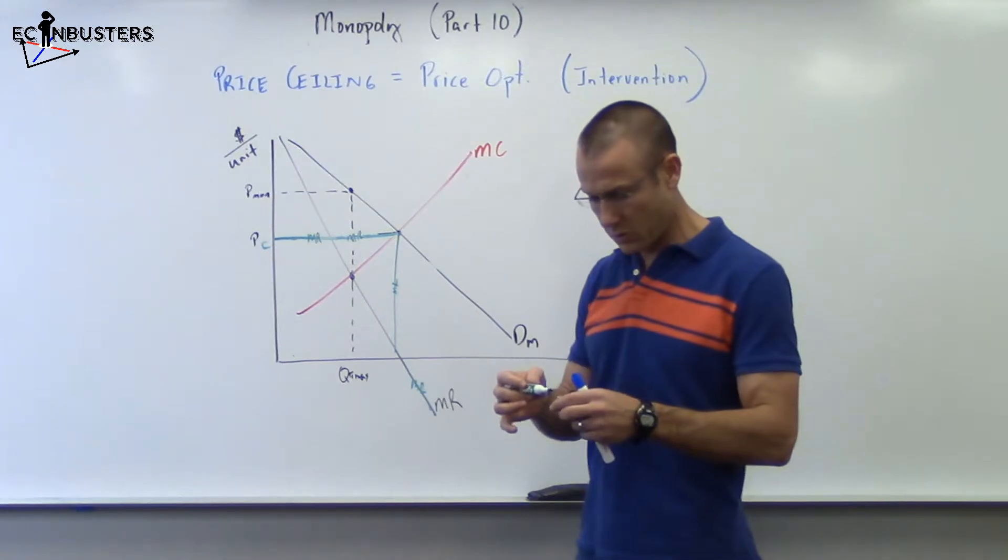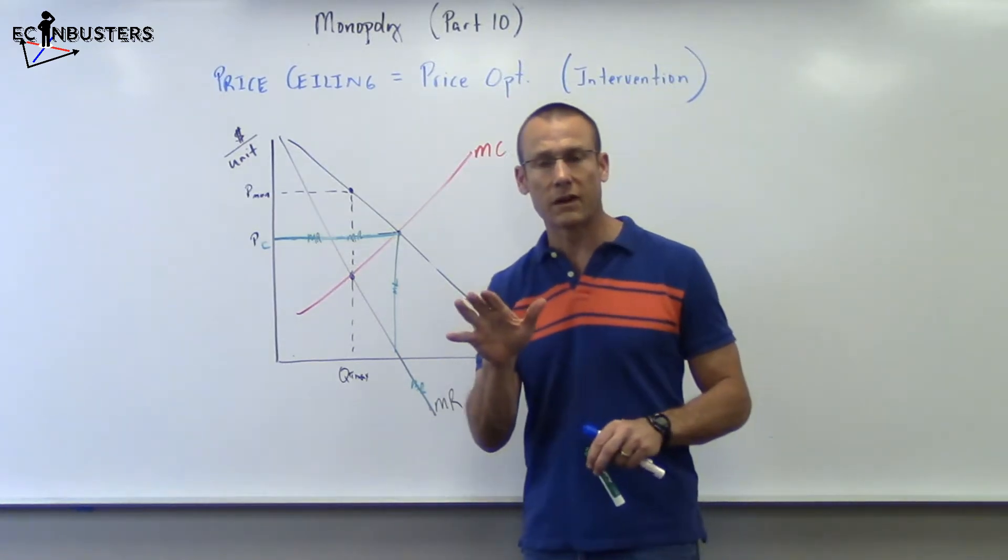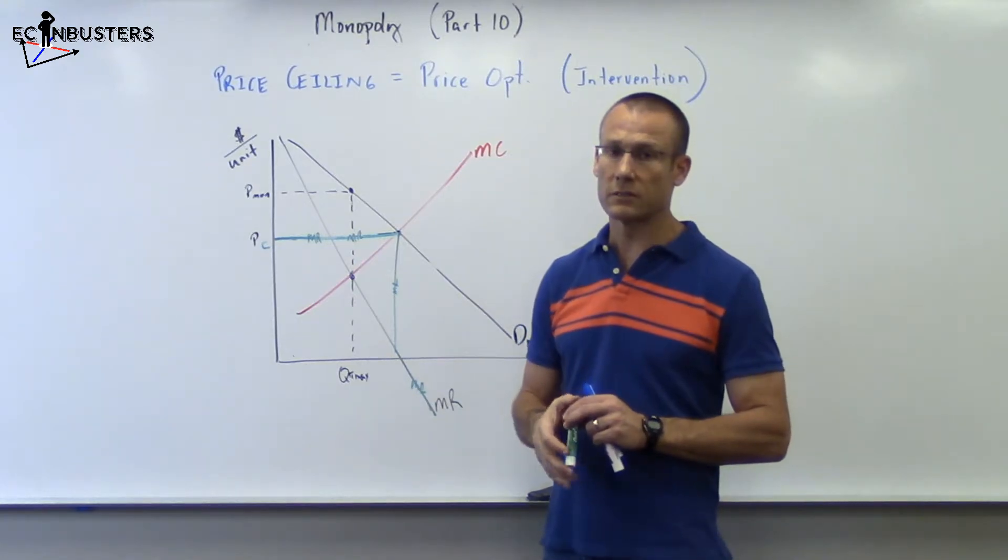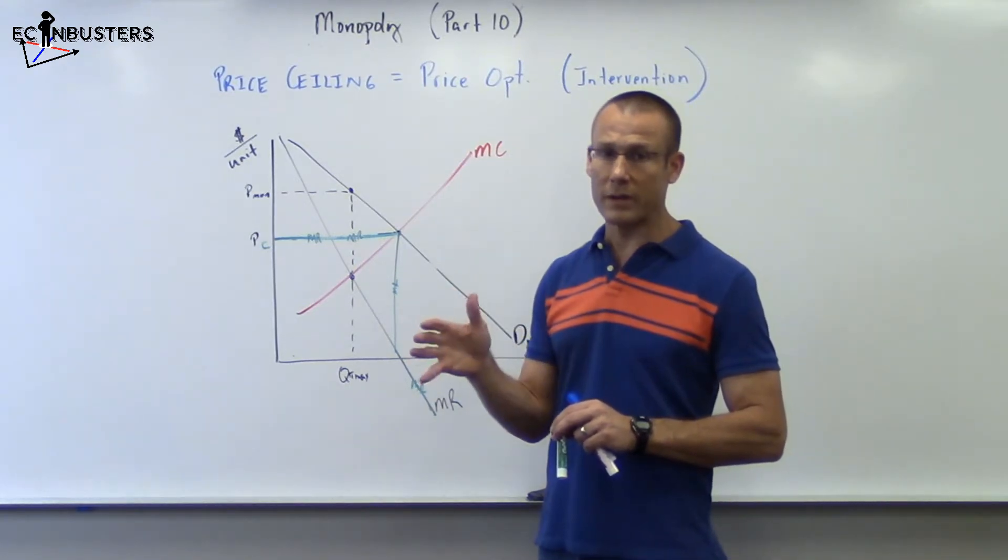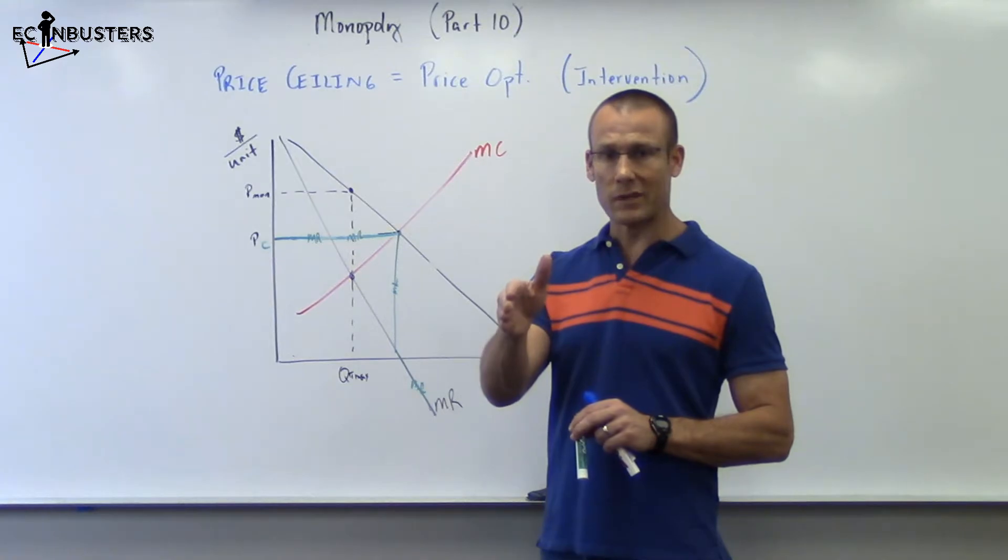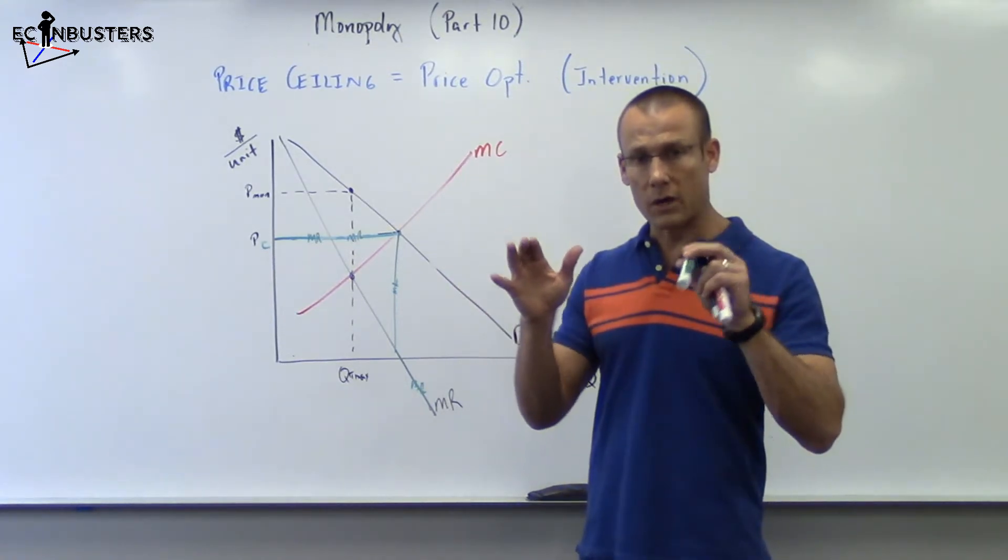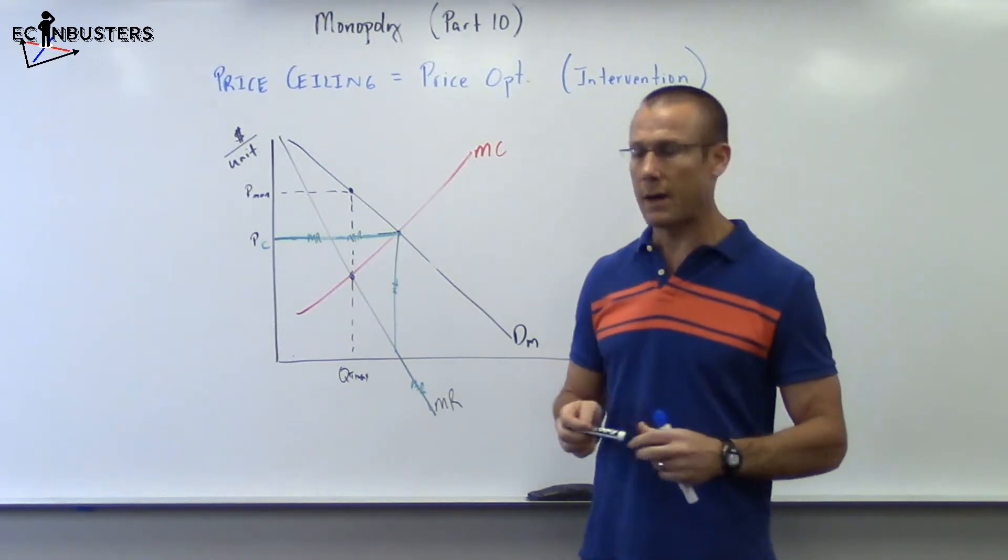Once the government intervenes, MR changes, and that means our output is going to change because output is always based on MC equals MR. Right? At least that's what the firm's going to do. They're going to produce as long as MR exceeds MC. So let's see what happens to our output.